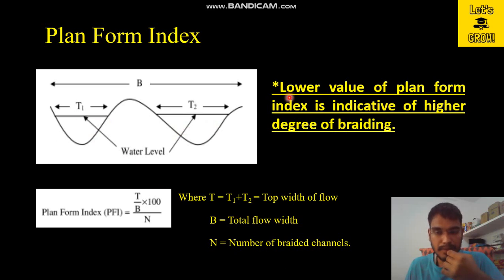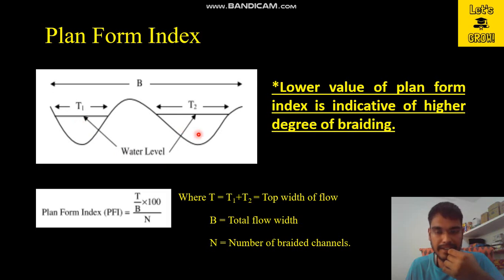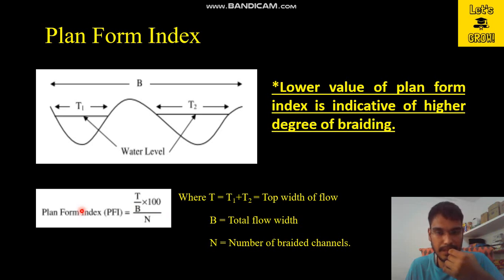The most important point is that a lower value of plan form index is indicative of a higher degree of braiding. If there are more braided channels, N increases, which causes the plan form index to decrease — so a lower plan form index value indicates a higher degree of braiding. This is all about the sinuosity index and plan form index.